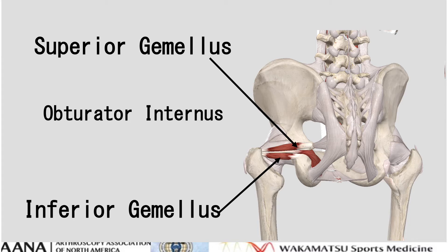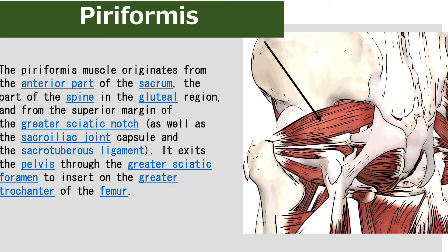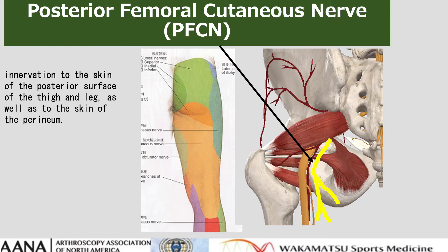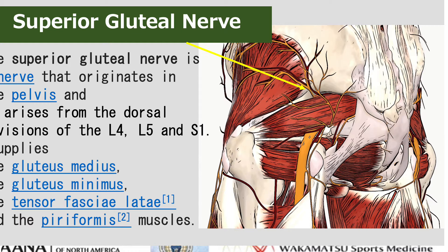This is the superior gemellus and inferior gemellus. This is the piriformis muscle. It exits the pelvis through the greater sciatic foramen to insert at the greater trochanteric fossa of the femur. This is the sciatic nerve. It passes beneath the piriformis and through the greater sciatic foramen exiting the pelvis. The posterior femoral cutaneous nerve provides innervation to the skin of the posterior surface of the thigh and leg as well as the skin of the perineum. This is the superior gluteal nerve, which originates in the pelvis and supplies the gluteus medius, gluteus minimus, tensor fascia lata, and piriformis muscle.